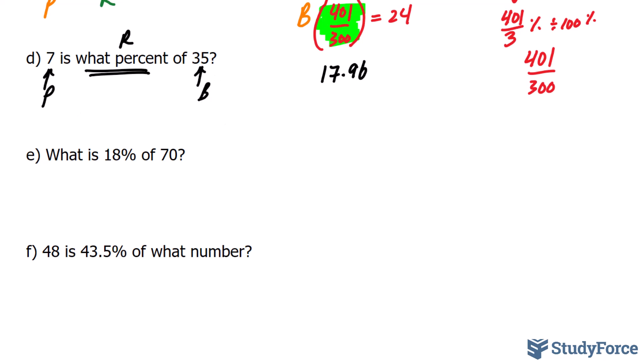So to set this up, using BR equals P, you would have 35 times an unknown R value and your portion is 7. Dividing both sides by 35 would lead you to R. Don't forget to multiply by 100%.